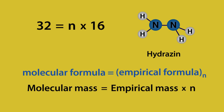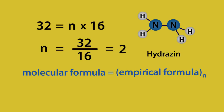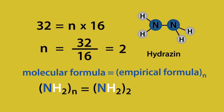Therefore, N is 32 divided by 16, which equals 2. So the molecular formula is the empirical formula times N — that's NH2 times 2 — which gives us N2H4.